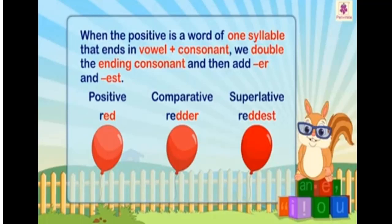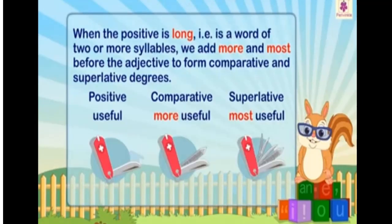When the positive is a word of one syllable that ends in a vowel and consonant, we double the ending consonant and then add -er and -est. For example: red, redder, reddest.